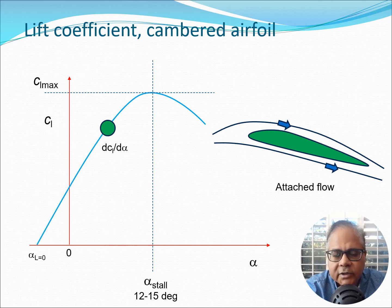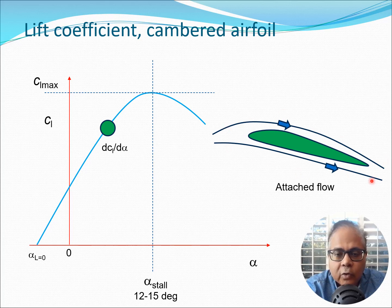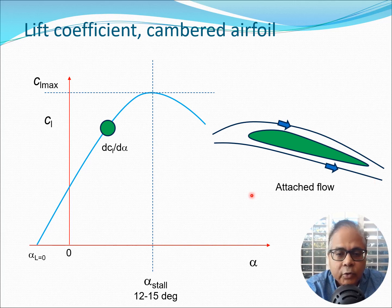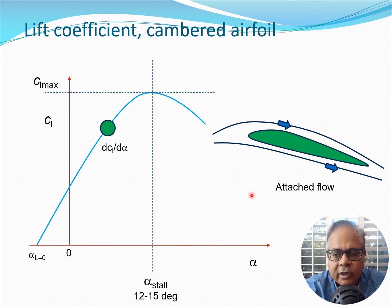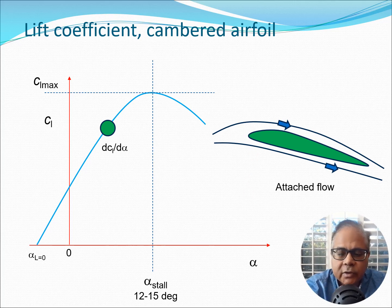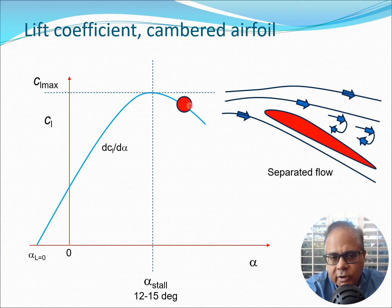Let's look at the physics at two different points in the flow. The first point is in the linear, unstalled region — the nice straight line region — which corresponds to essentially attached flow around the airfoil cross section. You have streamlines going smoothly around the airfoil. This is the typical flow at which cruise takes place for most aircraft; if you are traveling in a passenger jet, you are likely cruising at a low angle such as five degrees.